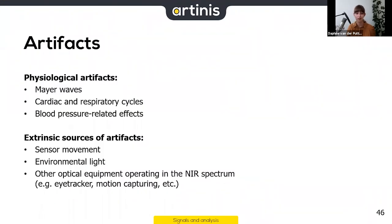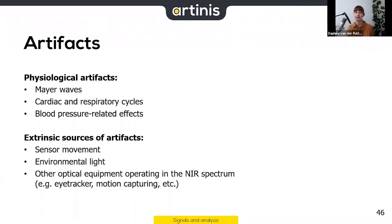To summarize artifacts: physiological artifacts include Mayer waves, breathing, heartbeat, and blood pressure-related effects. Extrinsic artifacts include sensor movement — so make sure your head cap is nice and tight — environmental lights such as flashes or strong sunlight, and other optical equipment operating in the near infrared spectrum, especially at the same wavelengths. You can always shield from light and test interference in our software; there are many ways to address these issues.